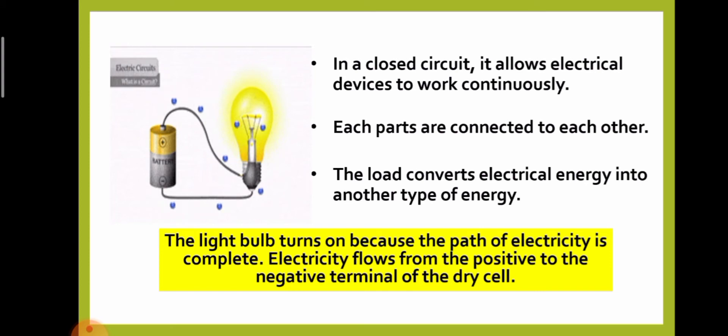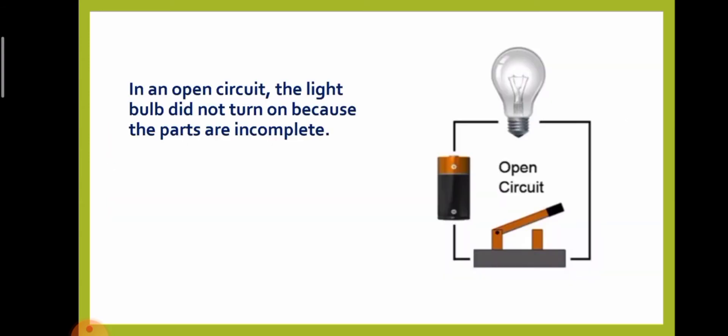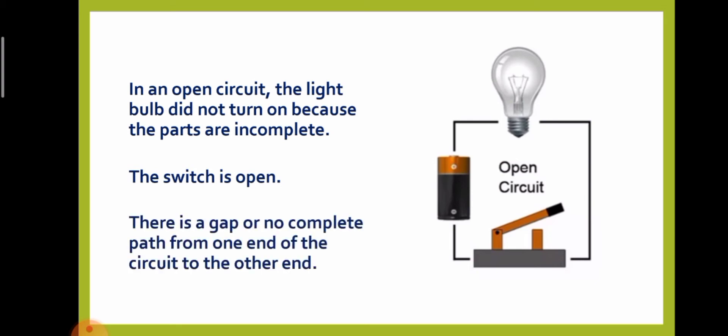Electricity flows from the positive to the negative terminal of the dry cell. In an open circuit, the light bulb did not turn on because the parts are incomplete — the switch is open. There is a gap, or no complete path from one end of the circuit to the other end.